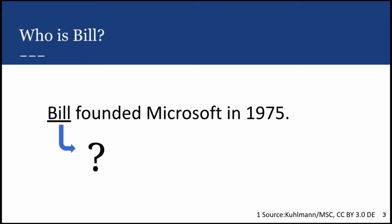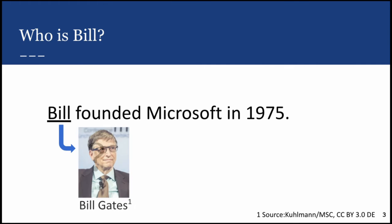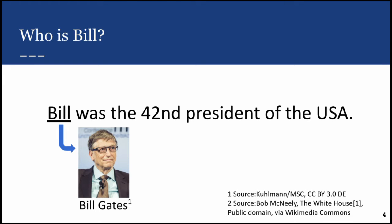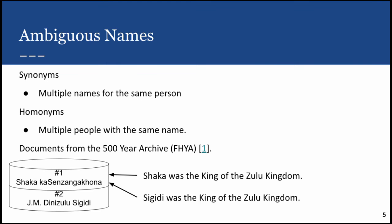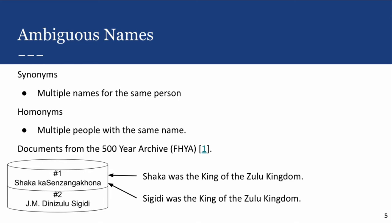But if we add some context then suddenly it becomes much clearer that it could refer to Bill Gates. However if the sentence in which the word Bill is used changes then it refers to a very different person. This is an example of homonyms, where multiple people might share the same name. But you can also get synonyms, where there might be multiple names which all refer to the same person.